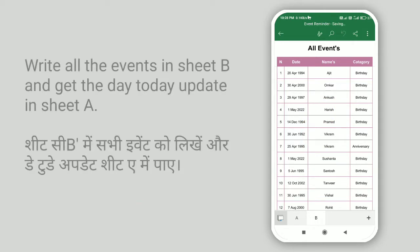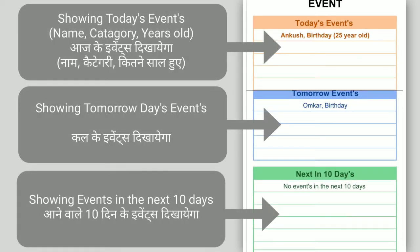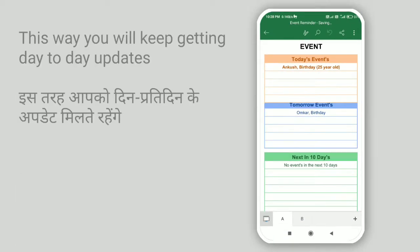Write all the events only once and get the day-to-day update of the events in Sheet A. The first chart will show all of today's events — name, category, and how many years old. The second chart will show next day's events. And the last chart will show all the events of the next 10 days.